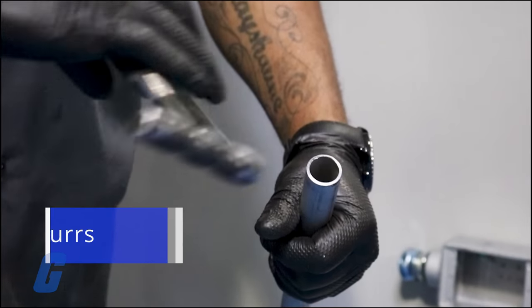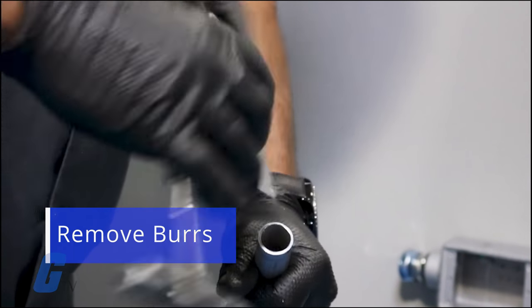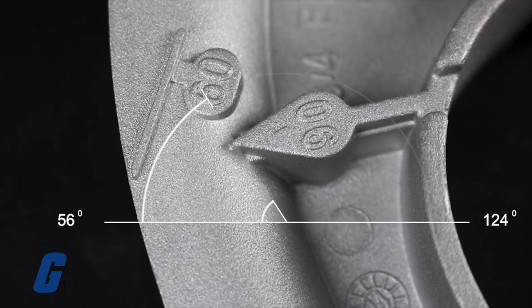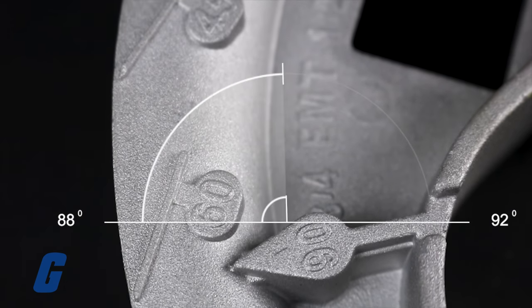you should remove the burrs from the end of the conduit using a conduit reamer or knife. Your bender will typically have 3 to 4 distinctive marking features, including the 90 degree mark.